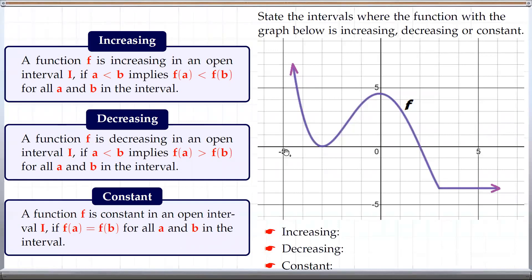So in this case we want to determine the intervals where the function is increasing, decreasing, or constant. When we say intervals we want to report x values where the function is behaving this way. So we can start from the left end here — we have negative infinity at the far left end, and it looks like the graph is decreasing for all these x values up to here, which is negative 3. So the graph is decreasing from negative infinity to negative 3.